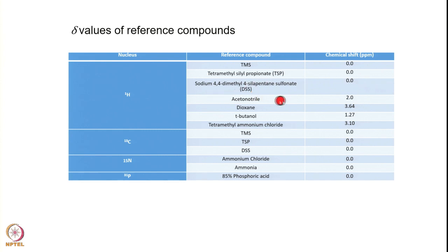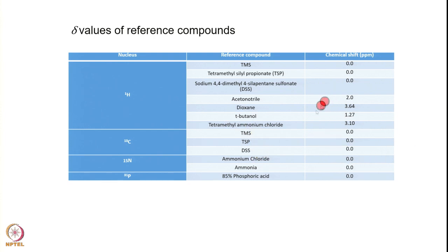Other reference compounds include acetonitrile, dioxane, and tertiary butanol. The listed chemical shift numbers are given relative to TSP or TMS. For carbon-13, TMS, TSP, or DSS are used, all at 0 frequency. For nitrogen-15, ammonium chloride or liquid ammonia are used, both taken as 0.0 ppm. For phosphorus, 85% phosphoric acid is used with its line at 0.0 ppm. These reference compounds can be added directly inside the sample as an internal reference, or placed in a capillary inserted into the sample tube as an external reference.